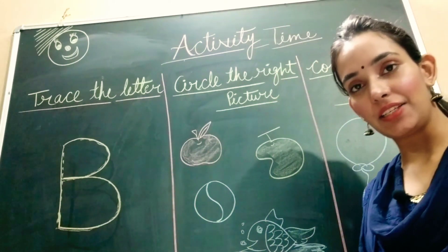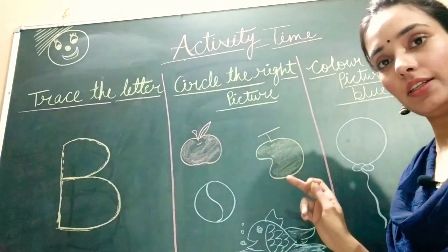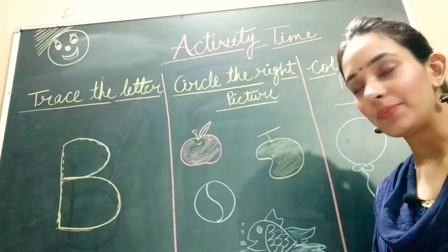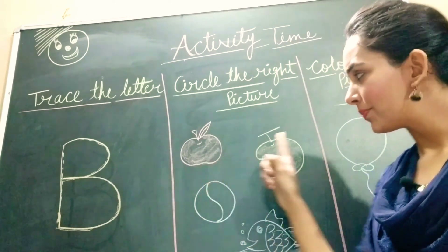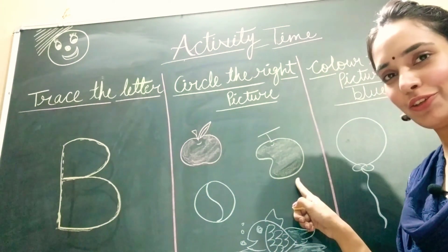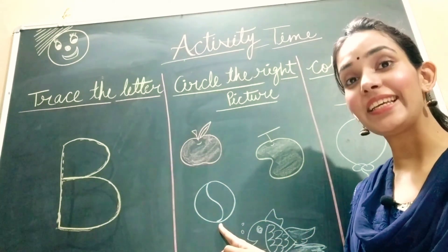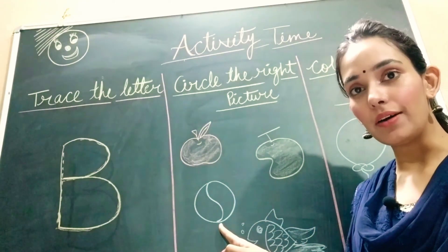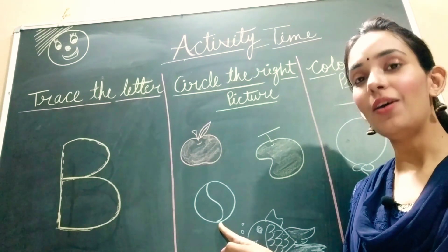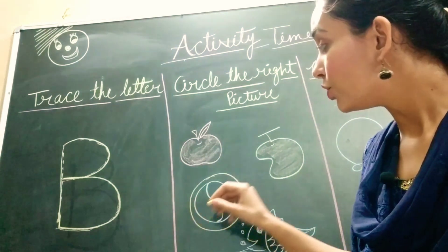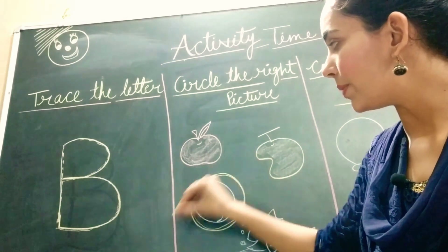In our second activity, we have to circle the right picture. Is this right? No. Is this right? No. Is this right? Yes — B for ball. So we will circle this picture.